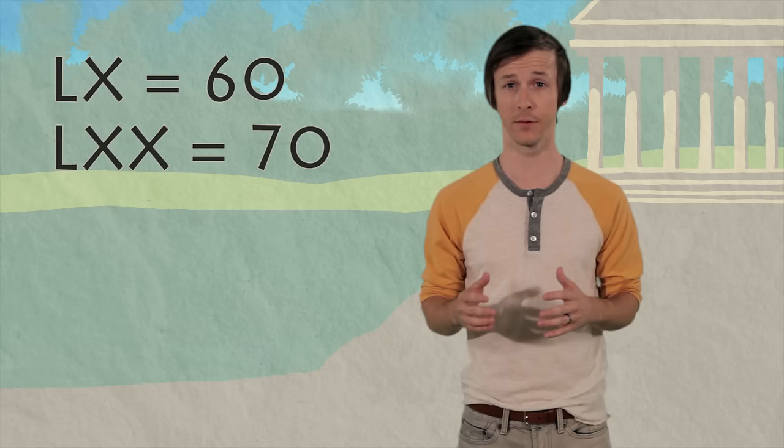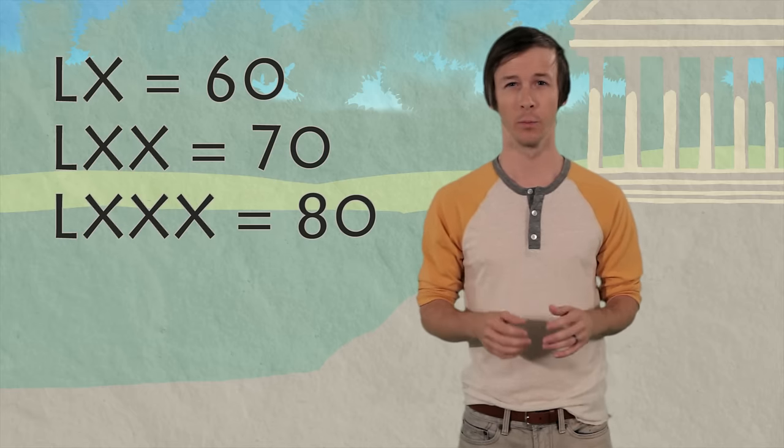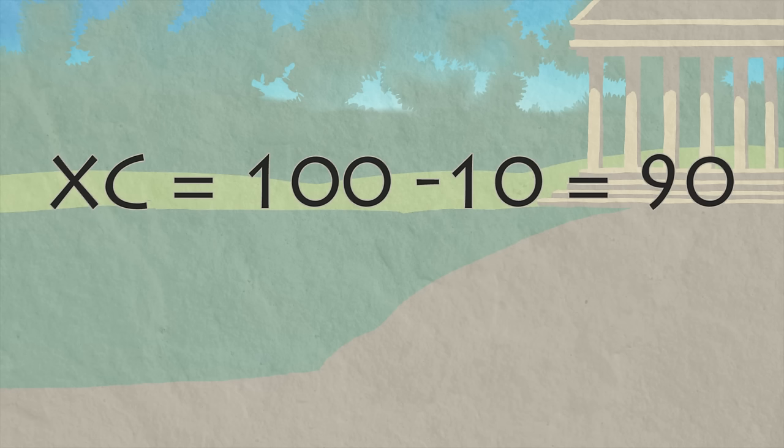The same goes for bigger numbers. Sixty is LX, seventy is LXX, and eighty is LXXX. But for ninety, you can't write LXXXX. You have to write XC. Ten less than one hundred.